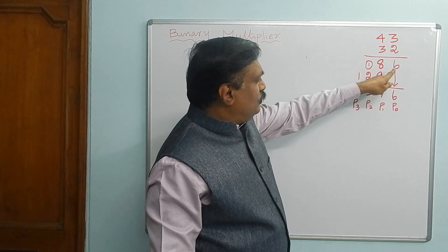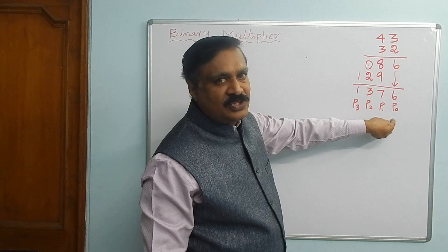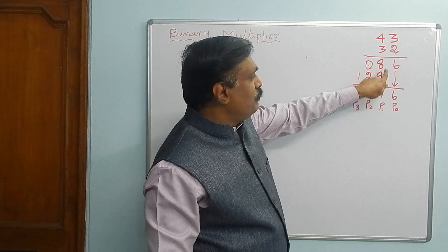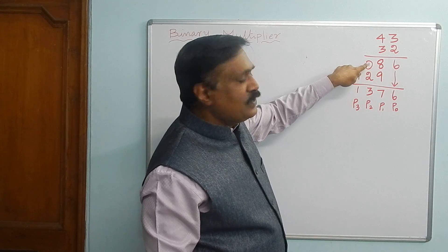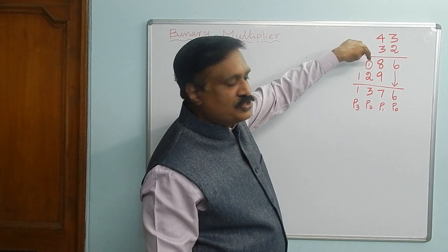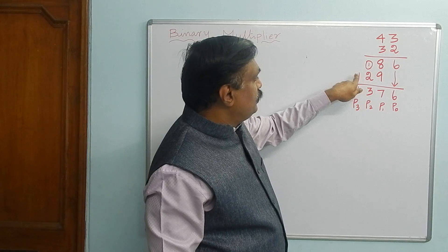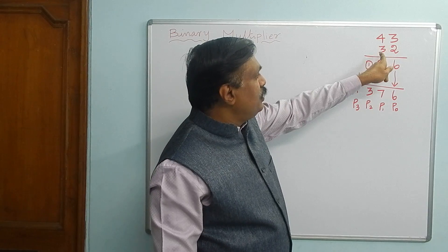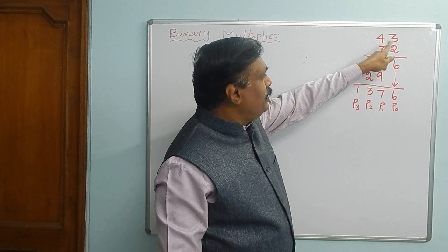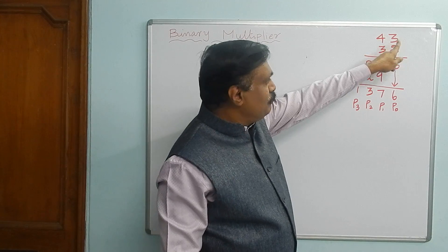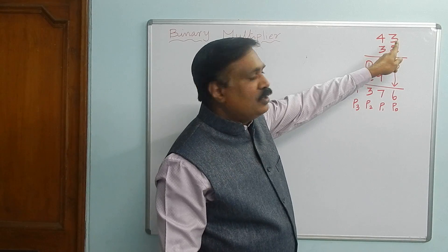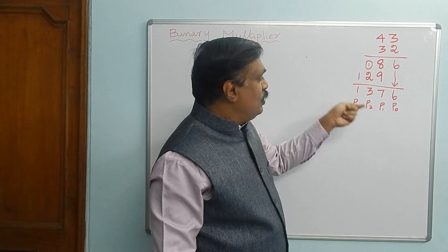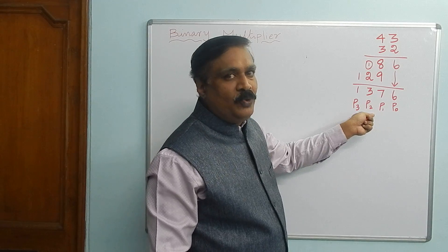After shifting one digit left, 3 multiplied by 3 and 3 multiplied by 4 gives the second partial product. Now you have to add: 8 plus 9 equals 17, so 7 is the result and 1 is taken as carry to the next digit. Then 2 plus 1 gives 3. This is the final product term — 43 into 32. A 2-digit decimal number multiplied by a 2-digit decimal number gives a 4-digit number. I mark the product digits as P0, P1, P2, and P3.